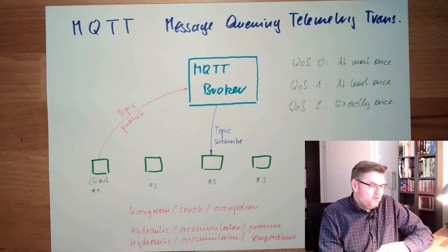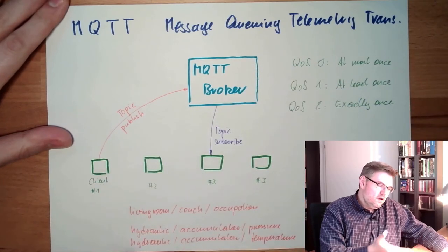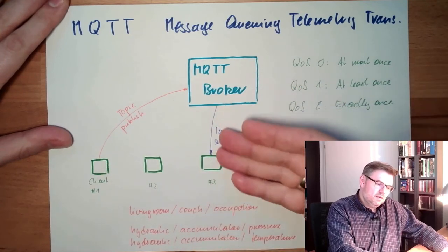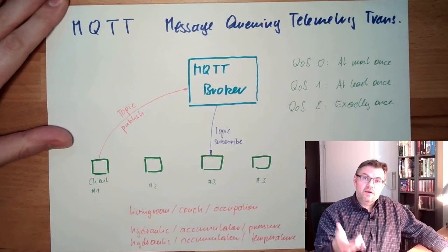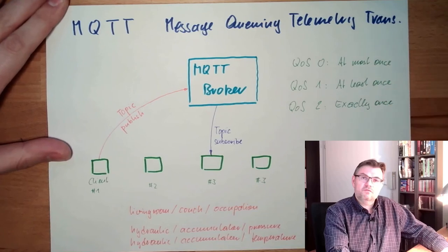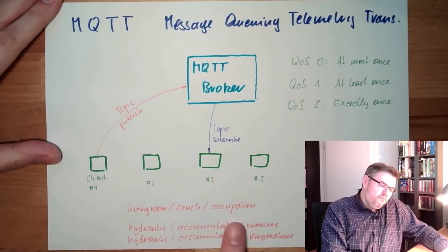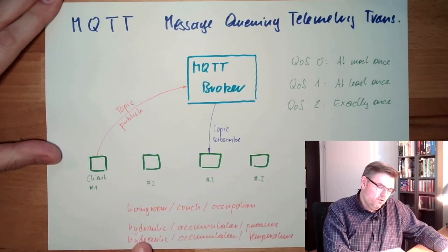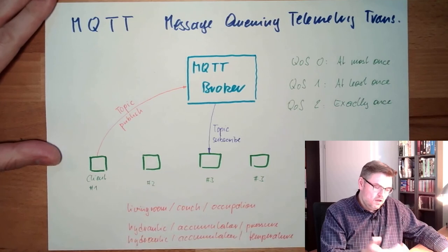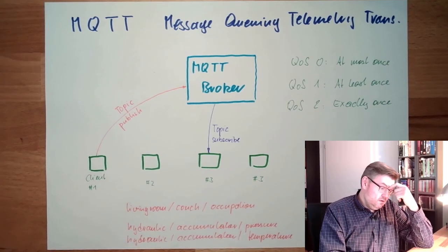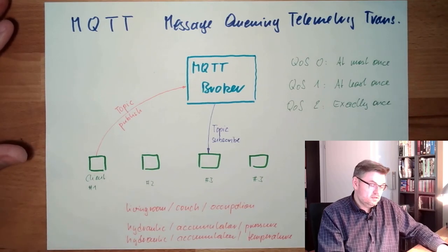So this is how MQTT works: there is a broker holding the information, topics are structured, clients may publish topics, clients may subscribe to topics, and subscribers are informed when topics are updated. New subscribers are informed even by past topics if the retain flag is set. Different levels of Quality of Service are available. You may also subscribe to a family of topics using wildcards, like 'hydraulics slash star' to subscribe to everything about hydraulics. Each client may also have a last will which is sent to subscribers in case the client is no longer reachable.